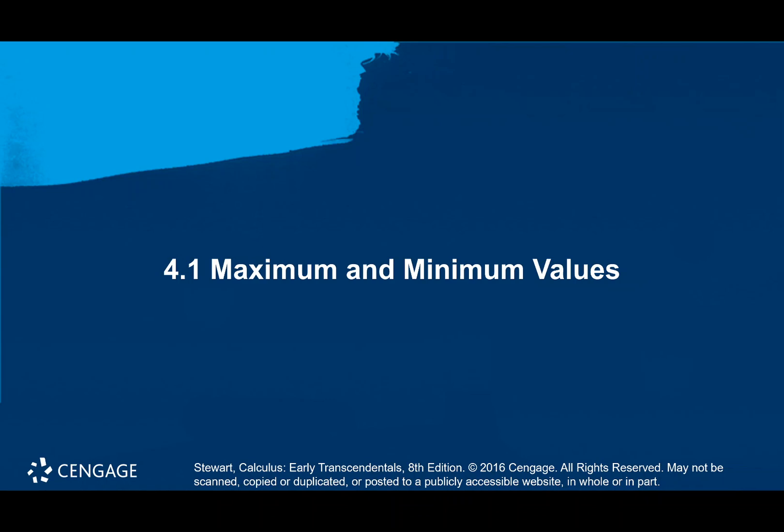In Section 4.1, we're starting out finding the maximum and minimum values of functions. We're going to look at when we're guaranteed that they occur, because you can have a function that has one or both. We're also going to talk about what our textbook calls local maximum and minimum values. That's our goal in this section.